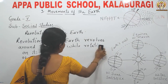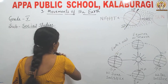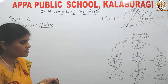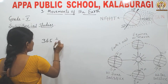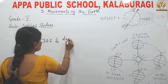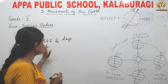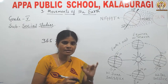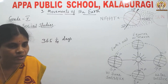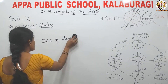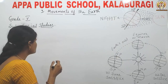How many days does the earth take to complete one revolution? The earth takes 365 and one-fourth days to complete one revolution. That means it takes approximately one year to complete one revolution. Due to the revolution of the earth, seasons are caused.